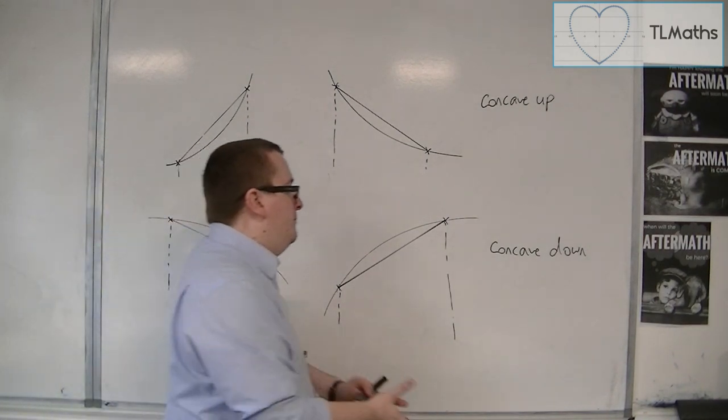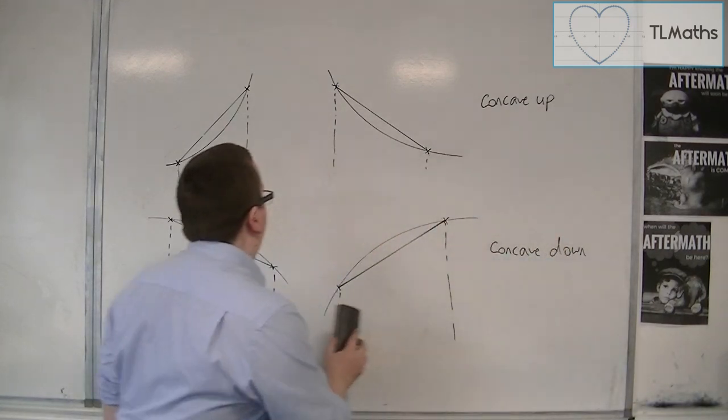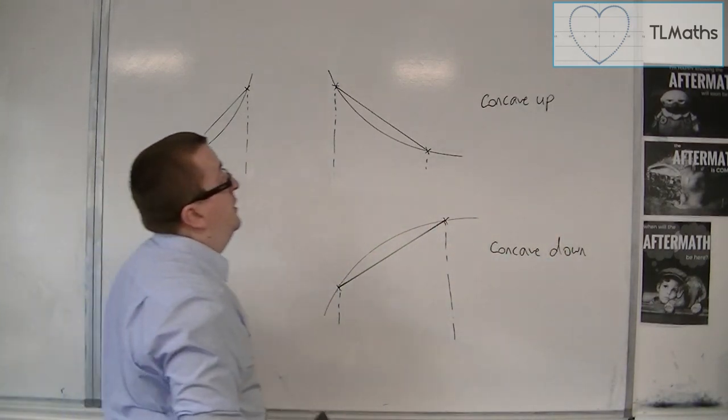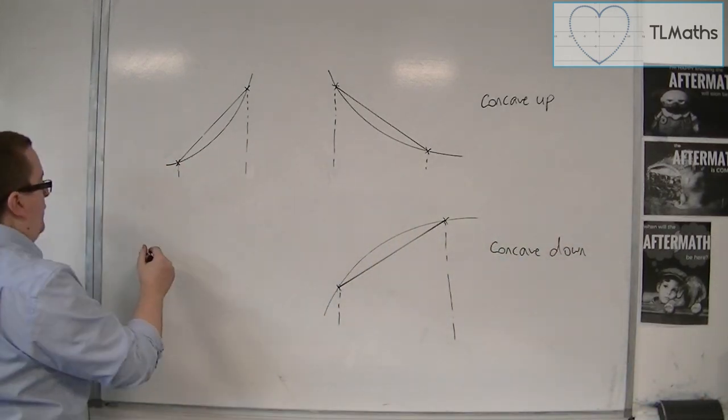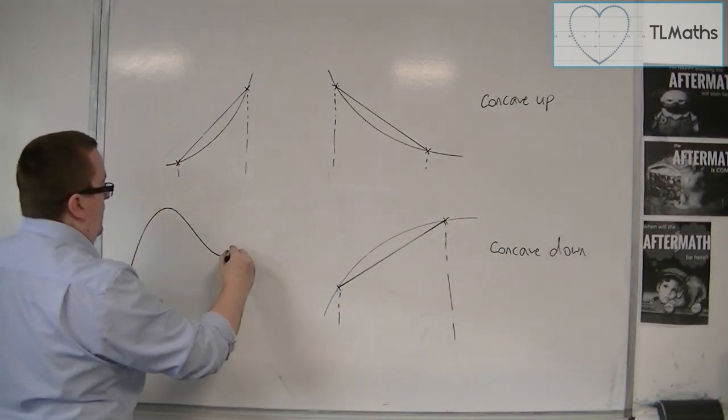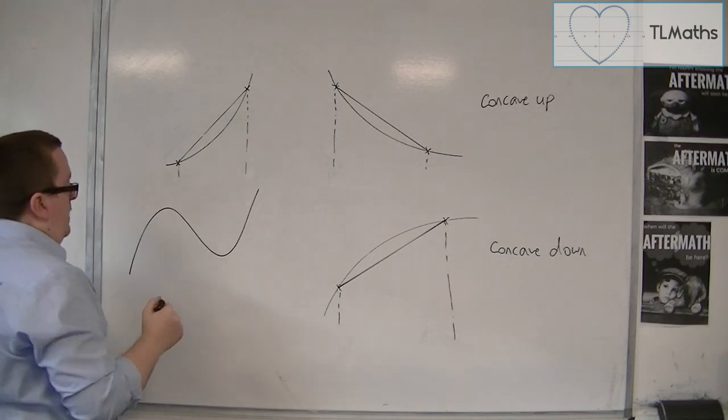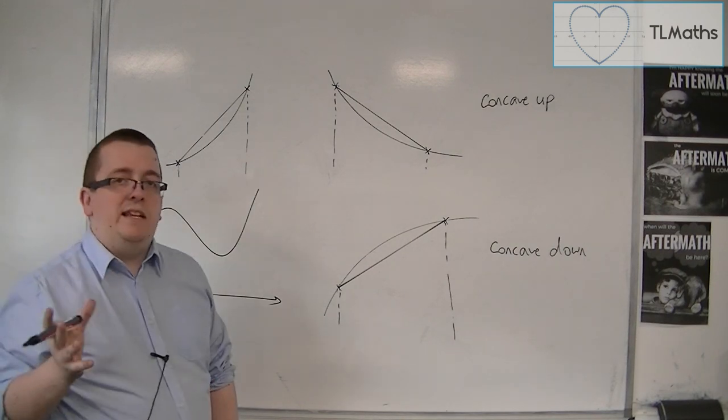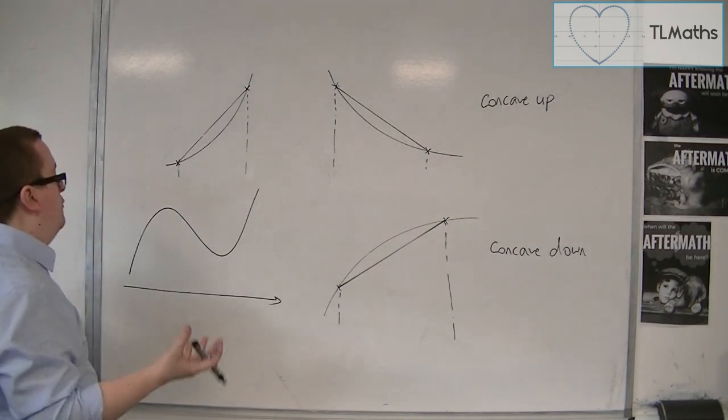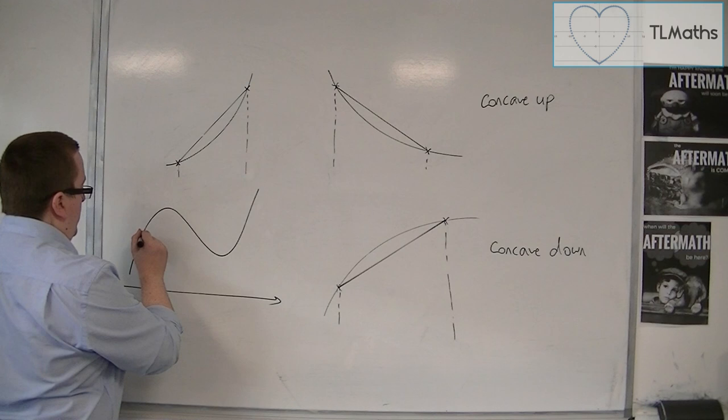Now, clearly, if the curve isn't just concave up or concave down, if it's doing a mix of things, if it looks something like this, then if I was going to use the trapezium rule under this, I can't very easily say whether it would be an overestimate or an underestimate.